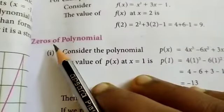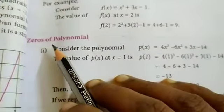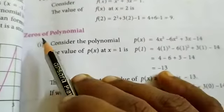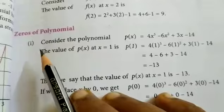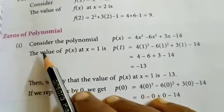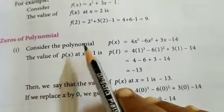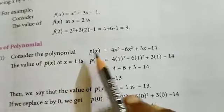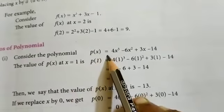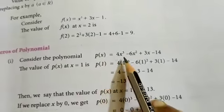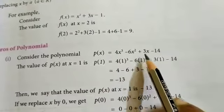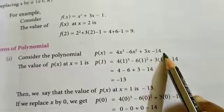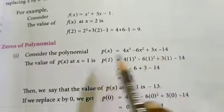Good morning students. Let us move to our next two topics: zeros of polynomial. Consider the polynomial f of x equal to 4x cubed minus 6x squared plus 3x minus 14.